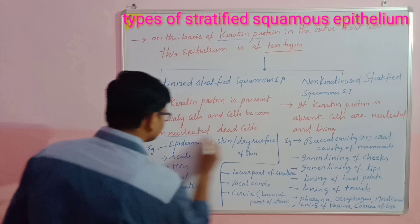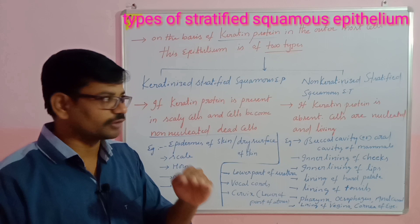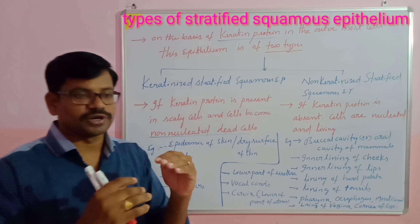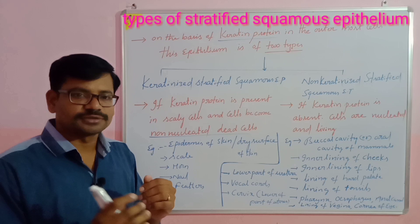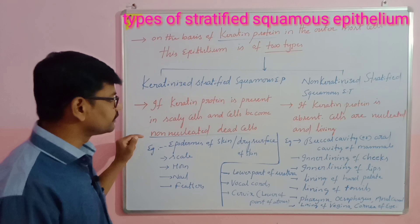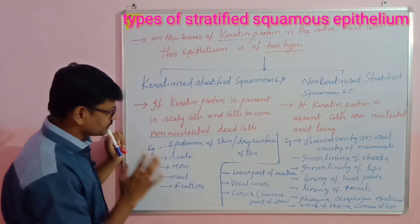When cells reach the epical surface, they are deposited with keratin. During this deposition, the cytoplasm, nucleus, and cell organelles all dry up and are replaced and filled with keratin, forming dead, non-living cells at the surface.